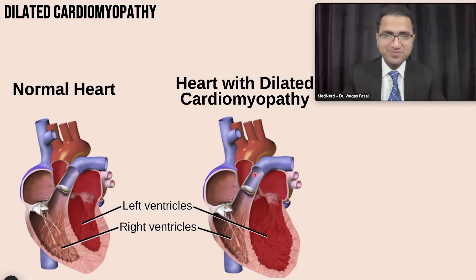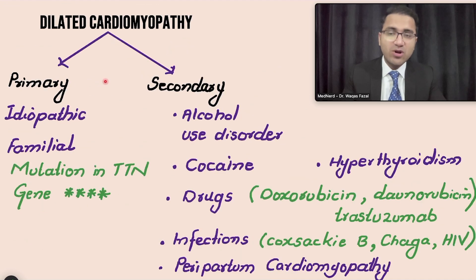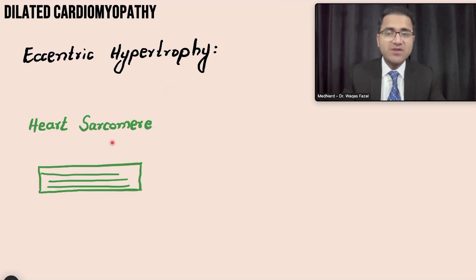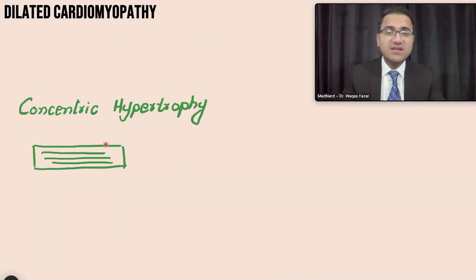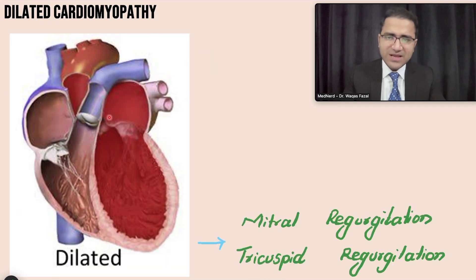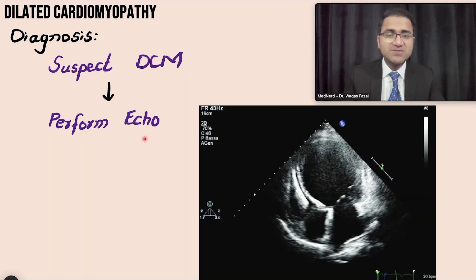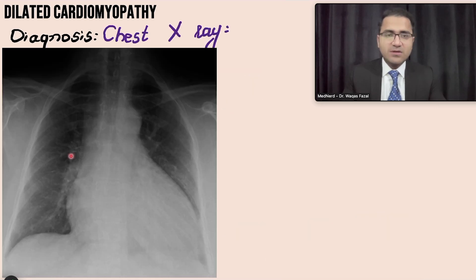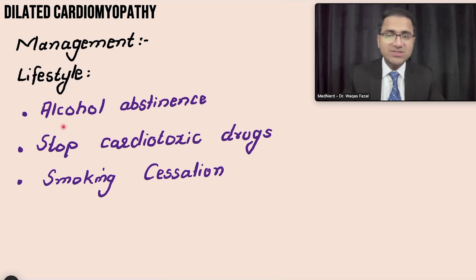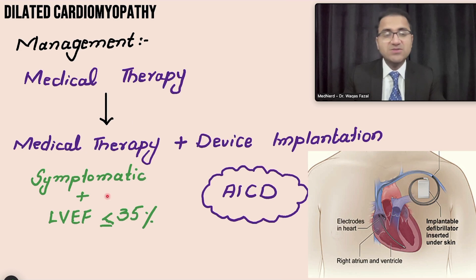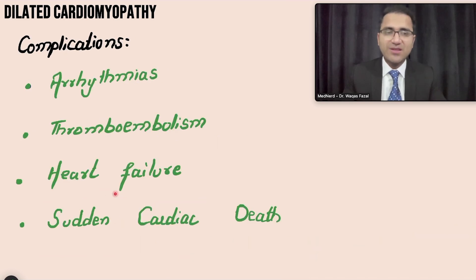In summary: we talked about what dilated cardiomyopathy is, its primary and secondary causes with the ABCCD mnemonic, why valvular heart disease and hypertension are not called dilated cardiomyopathy, eccentric hypertrophy (sarcomeres added in series) versus concentric hypertrophy in hypertrophic cardiomyopathy, the clinical presentation, mitral and tricuspid regurgitation, diagnosis on echocardiography with genetic testing and screening of relatives, supporting investigations including chest X-ray and ECG, and management including treating the cause, managing heart failure, and heart transplant if needed.